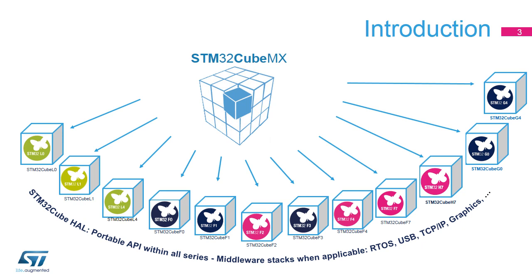STM32CubeMX is a graphical software configuration tool used to generate initialization code based on user choices. A complete embedded software package is available for each STM32 series, such as STM32CubeG4, with Hardware Abstraction Layer (HAL) and Low Layer (LL) APIs.